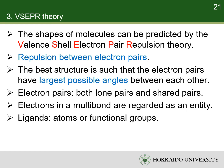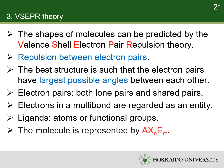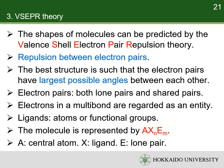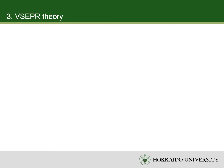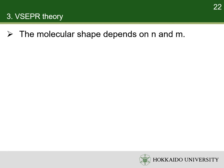The ligands are the atoms or functional groups bonded to the central atom. To use the VSEPR theory, the molecule is represented by AXnEm. A is the symbol of the central atom, X is the symbol of the ligand, N is the number of ligands, E is the lone pair of the central atom, and M is the number of lone pairs. The molecular shapes depend on the number of ligands and lone pairs.